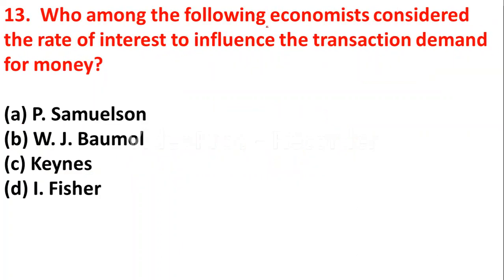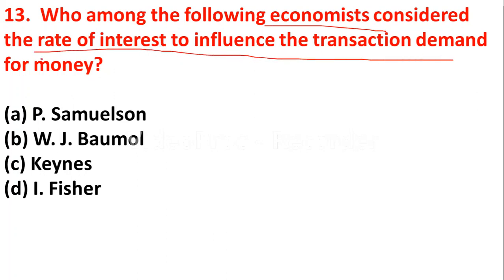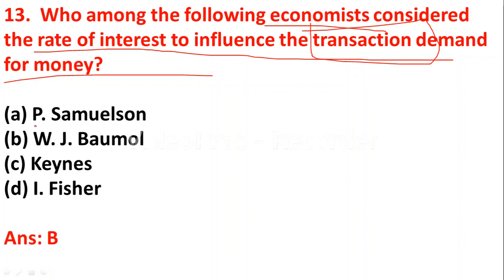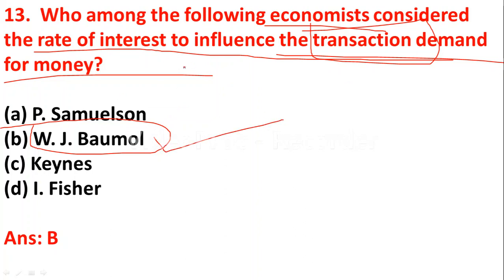Question number 13: who among the following economists considered the rate of interest to influence the transaction demand for money? While JM Keynes considered income as the influencing factor of transaction demand for money, W.J. Baumol considered the rate of interest as the influencing factor of transaction demand for money.